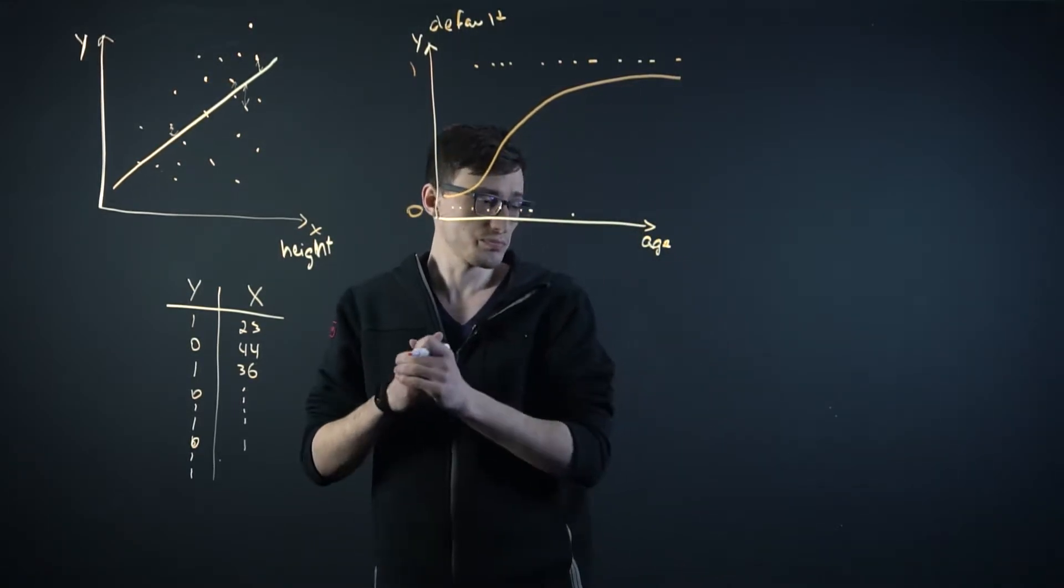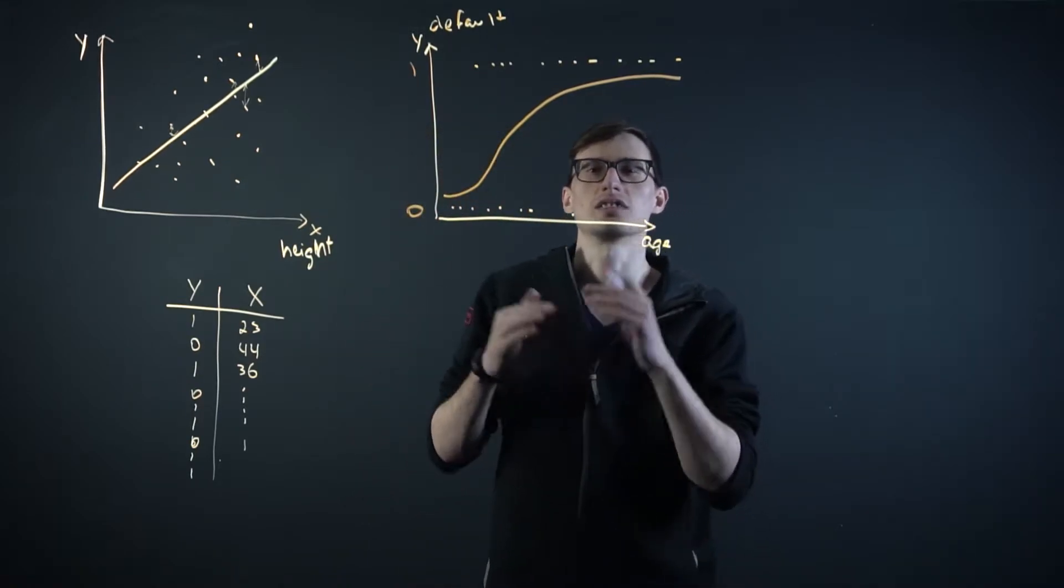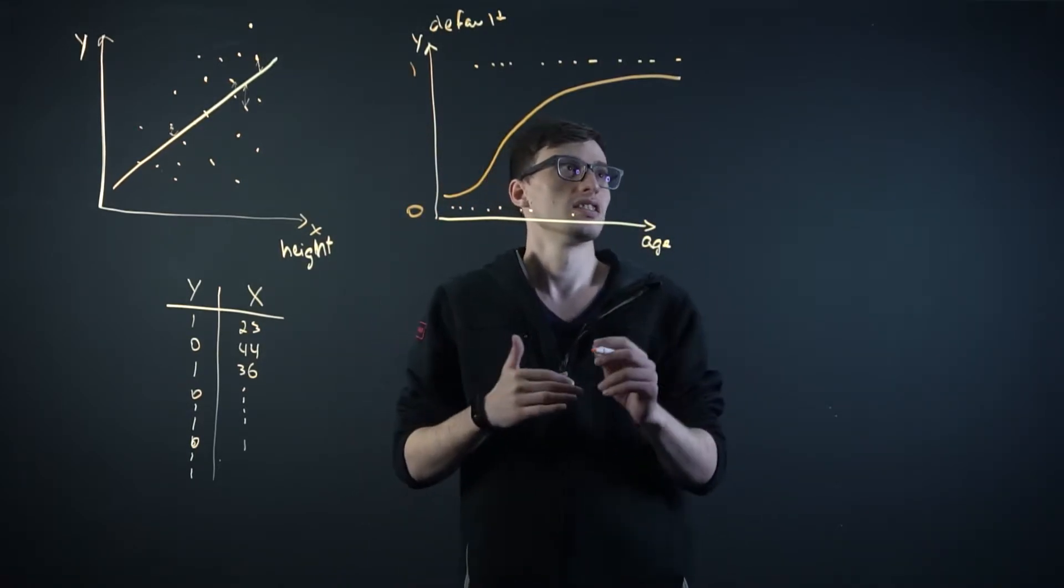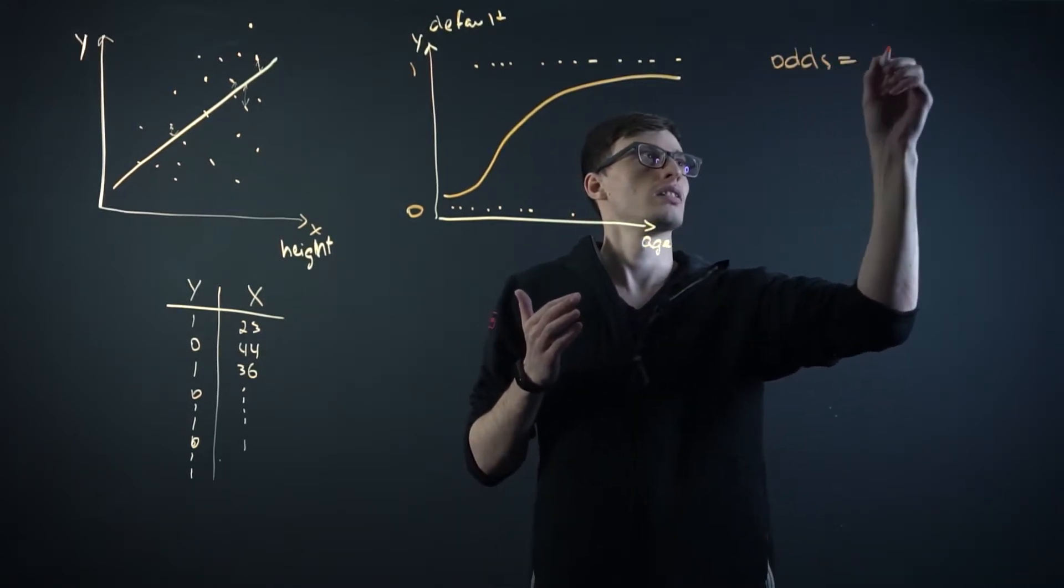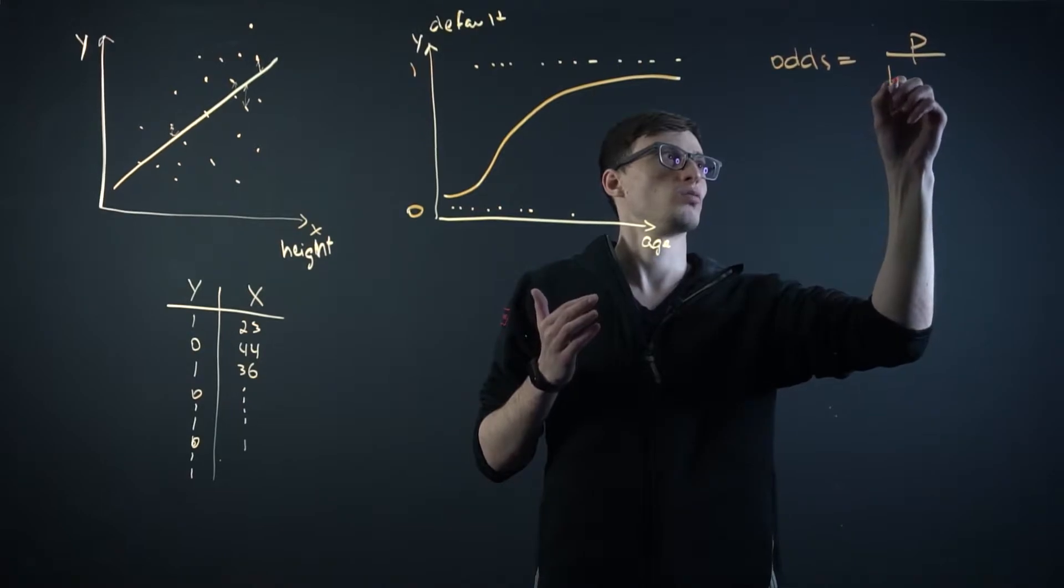So how do we draw this line? Well, we need to understand something called odds. You probably hear this a lot in sports betting. So the odds is defined as p divided by 1 minus p.